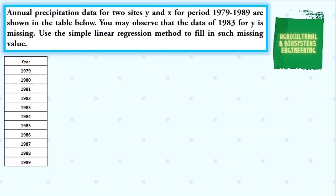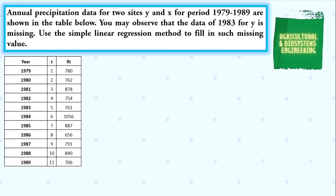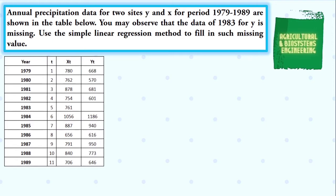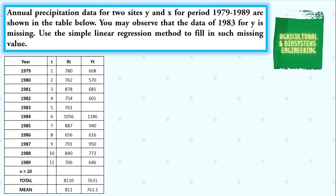We reconstruct our table and fill it with the necessary values. We have the year from 1979 to 1989, followed by the order of numbers, then data X, then data Y. We have the N value to be 10 because we exclude the data for year 1983. After that, we get the total and mean for the X and Y data. In getting the mean, we do not include the values for the year 1983 — this is applicable to all values of the mean and total.